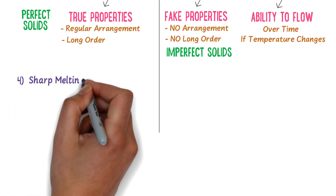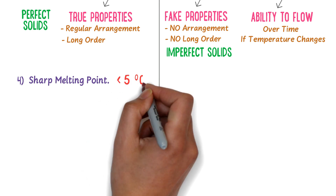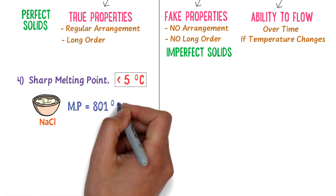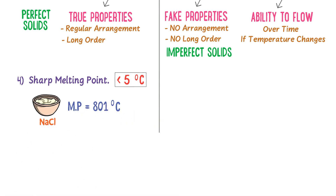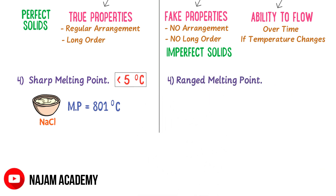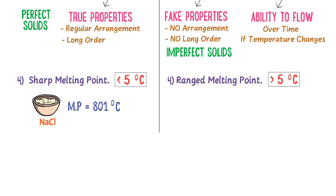Fourthly, crystalline solids have a sharp melting point. The range of melting point is less than 5 degrees centigrade. For example, the melting point of sodium chloride is 801 degrees centigrade, which may increase or decrease by 5 degrees centigrade depending on various factors. While amorphous solids have a ranged melting point — the range of melting point is greater than 5 degrees centigrade.